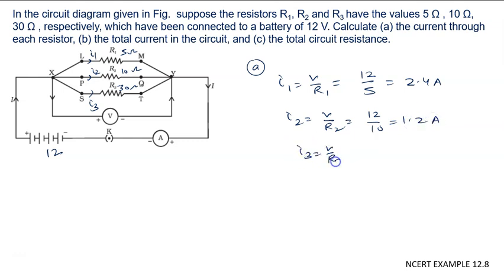I3 is given by V upon R3. V is 12, R3 is given to us, that is 30. 12 upon 30, 3 for the 12, it is 0.4 ampere.